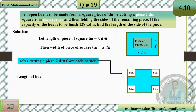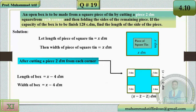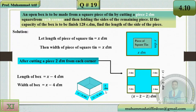After cutting 2 dm from each corner, the new length is x − 4 decimeters and the new width is also x − 4 decimeters. The height of the box is 2 decimeters, which is the piece cut from the corner.